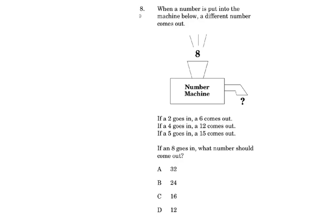When a number is put into the machine below, a different number comes out. If a two goes in, a six comes out. If a four goes in, a twelve comes out. If a five goes in, a fifteen comes out. So basically we put eight in here, what will come out at that side? If an eight goes in, what number should come out?